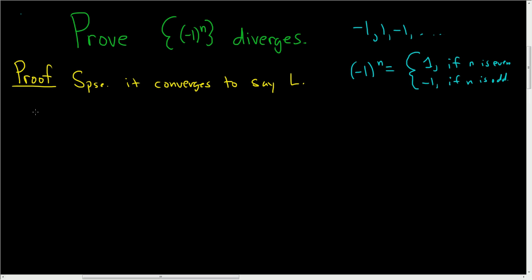And that means that for every epsilon greater than 0, there is a positive integer N such that for all little n bigger than that N, the difference between the terms of our sequence and L are smaller than epsilon. So I said a lot there really fast.